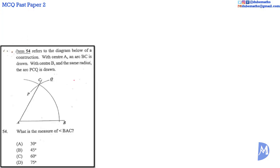Question 54. By definition, this is how we construct a 60 degree angle. The answer is C.